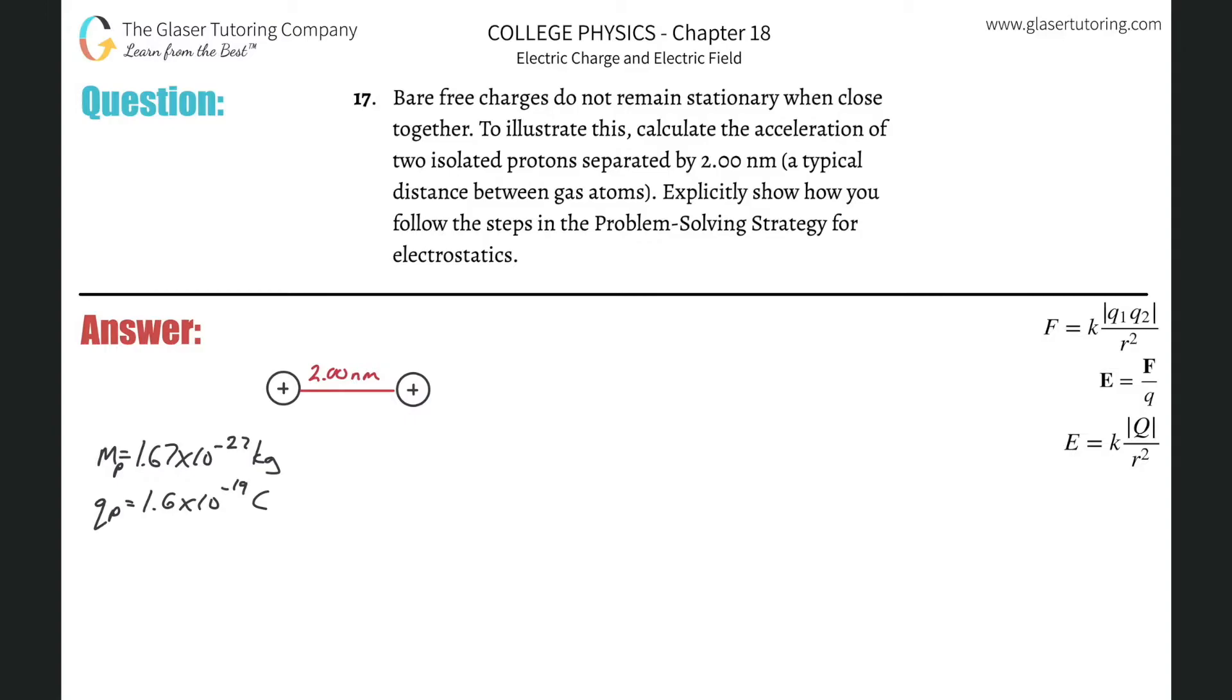Number 17. Bare free charges do not remain stationary when close together. To illustrate this, calculate the acceleration of two isolated protons separated by two nanometers, a typical distance. Explain how you follow the steps in the problem-solving strategy. So we have two protons separated by about two nanometers and we have to find their acceleration.